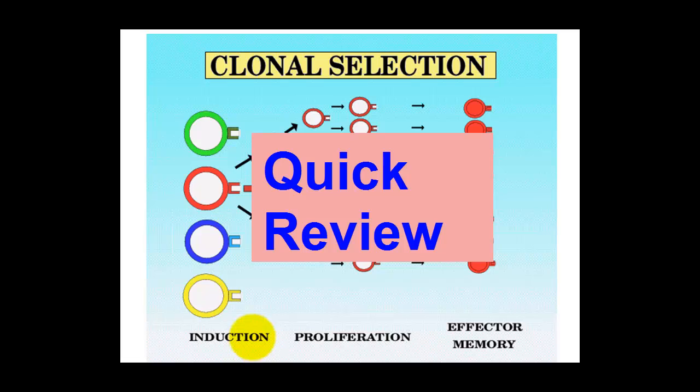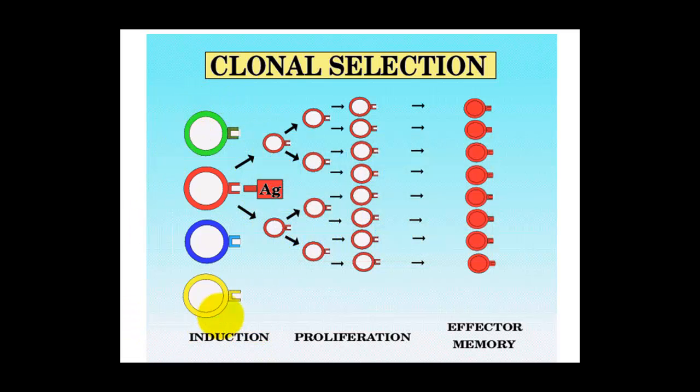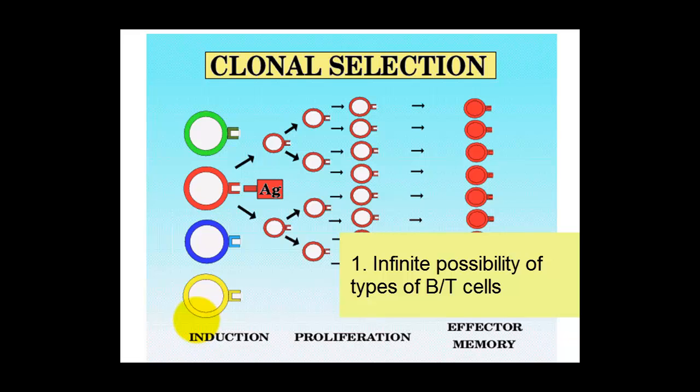So the main points here: we have an infinite number of B or T cells, each with its own specific shape of antigen recognition molecule, being an antibody in B cells.